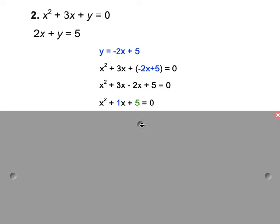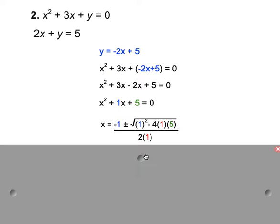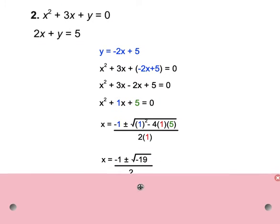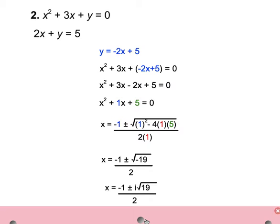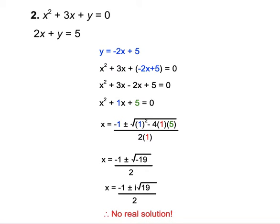Remember, x equals negative b plus or minus the square root of b squared minus 4ac all over 2a. So my a is 1, my b is 1, and my c is 5, and I substitute it in my equation. Once I've substituted it into the equation, I simplify and I get negative 19 inside the discriminant. Well, we learned that a negative 19 in a discriminant means that it's going to have an imaginary solution. So if we're thinking about graphs, an imaginary solution means these graphs are never going to intersect. So in conclusion, there is no real solution to this problem.